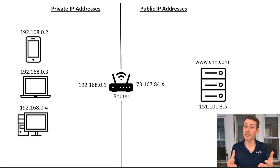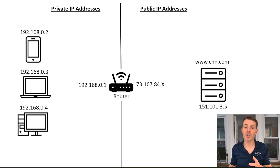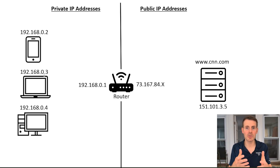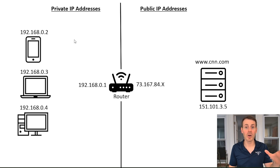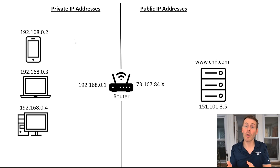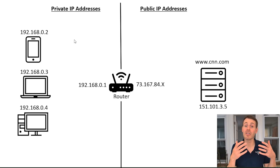A slight drawback of NAT is that if you want to make any devices on your home network accessible from the public internet, there are additional steps required — namely port forwarding. For example, if you wanted to host a game server on your home network, you'd need to implement port forwarding to make those resources available. It's a little extra work, but for the security that NAT provides, it's totally worth it.